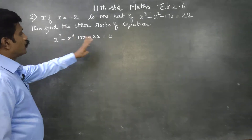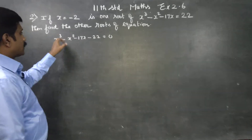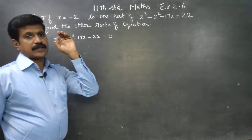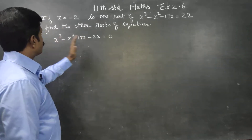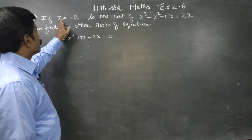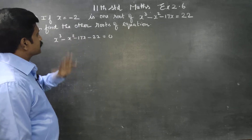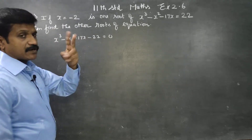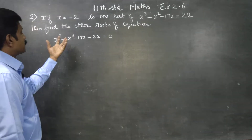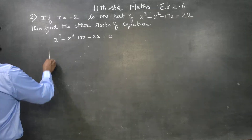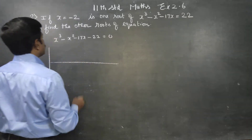It has 3 roots. Power is 3, so it must have a maximum of 3 roots. In 3 roots, there is a simple division called synthetic division.